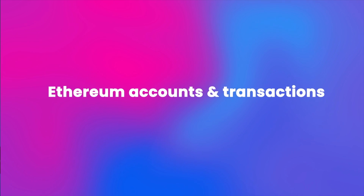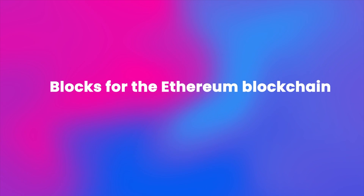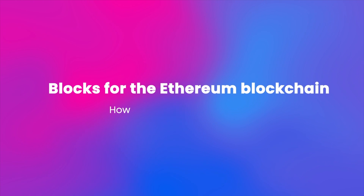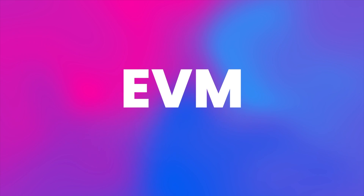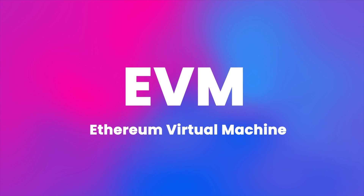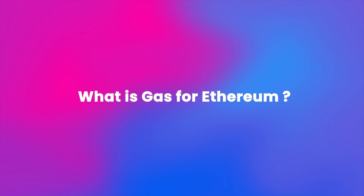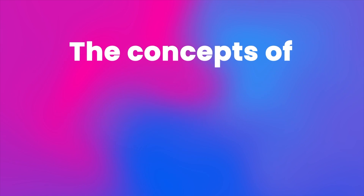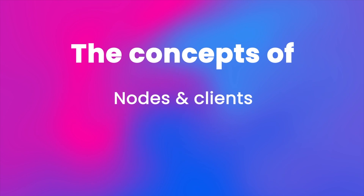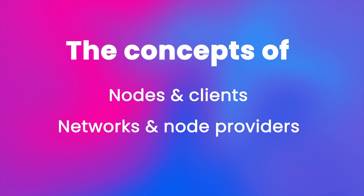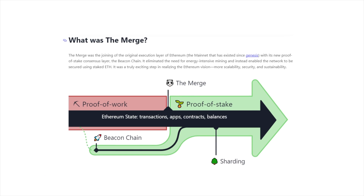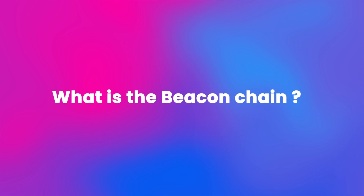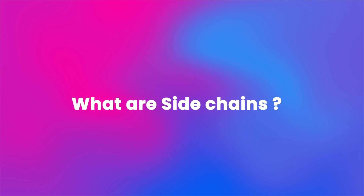So after you choose a blockchain — in this case Ethereum — there are some core and basic concepts you should know that are specific to that blockchain: Ethereum accounts and transactions, blocks for the Ethereum blockchain and how they work, EVM which stands for Ethereum Virtual Machine, what is gas for Ethereum, the concepts of nodes and clients, networks and node providers. Also, what happened with the merge in September 2022, what is the beacon chain, and what are sidechains.